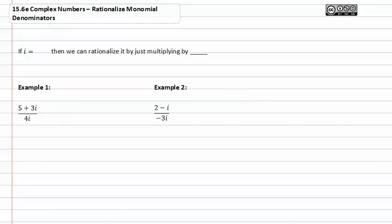Let's talk about rationalizing monomial denominators. Remember that i is the square root of negative one. This is important to remember if we get an i in the denominator. If i is equal to the square root of negative one, then we can rationalize it by multiplying by i.